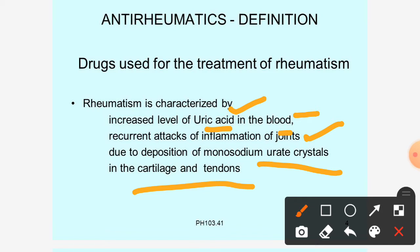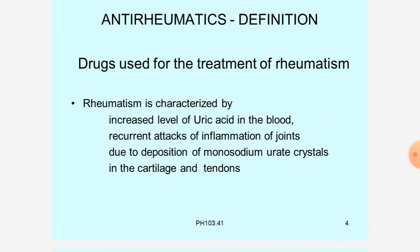The uric acid that has increased in the blood forms crystals which precipitate — monosodium uric acid crystals deposit there — causing inflammation. The joints swell and there is pain. That condition is called rheumatism.